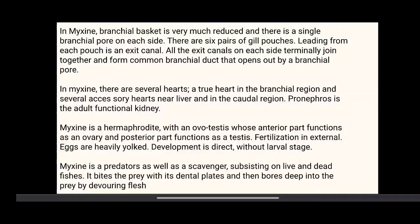In Myxine, the branchial basket is very much reduced and there is a single branchial pore on each side. There are six pairs of gill pouches; leading from each pouch is an exit canal. All exit canals on each side join together terminally to form a common branchial duct that opens out by a branchial pore. In Myxine, there are several hearts: a true heart in the branchial region and several accessory hearts near the liver and in the caudal region. The pronephros is the adult functional kidney. Myxine is hermaphroditic, with an ovotestis whose anterior part functions as an ovary and posterior part functions as a testis. Fertilization is external. Eggs are heavily yolked. Development is direct without a larval stage. Myxine is a predator as well as a scavenger, subsisting on living and dead fishes. It bites the prey with its dental plates and then burrows deep into the prey by devouring flesh.